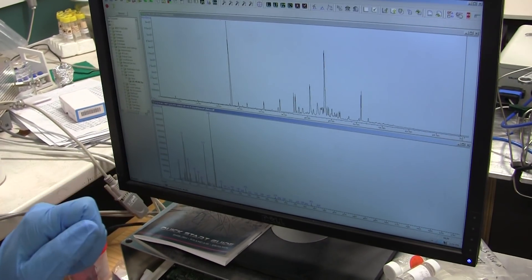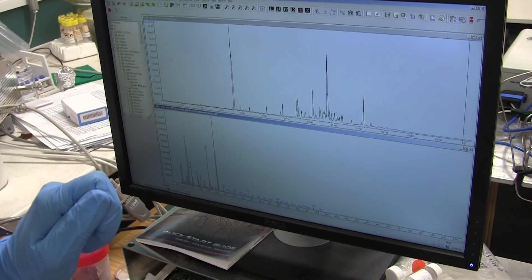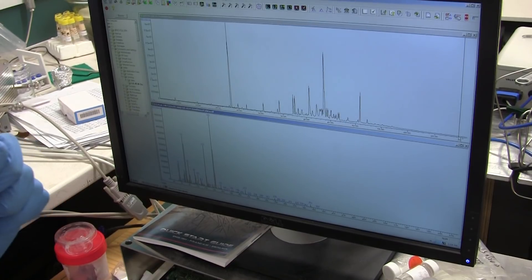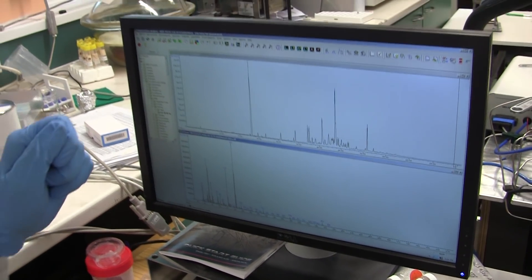This compound for example is a hopanoid, a typical indicator for bacteria in our lake. And most of these compounds are steroids which trace algae in the lake.